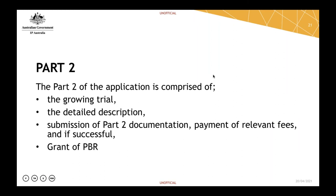Once the application is accepted through Part One, we then commence Part Two. The Part Two application is comprised of a growing trial, which is where we test whether a plant variety is distinct, uniform and stable. From that growing trial, the QP in conjunction with the applicant and the plant breeders rights office will develop a detailed description. The detailed description will then get published in the Plant Varieties Journal, which is published four times a year, and instigates a public notification period. There's then a requirement for submission of further Part Two documentation — certification documents and other things — and a payment of relevant fees. If all this passes through successfully, the plant will be eligible for granted PBR.